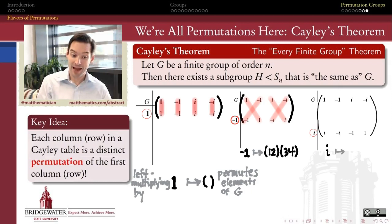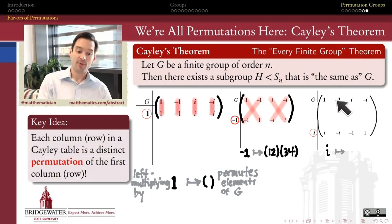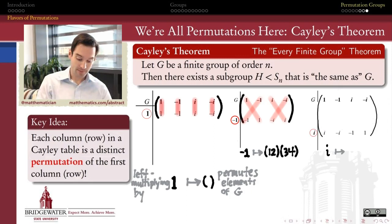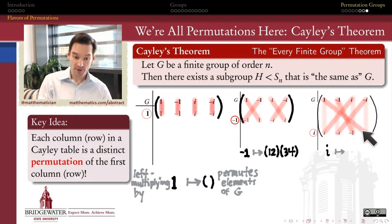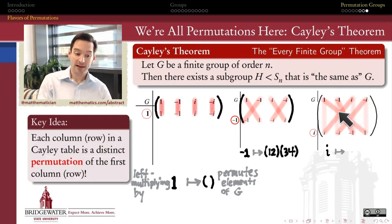What about multiplication by i? If I multiply i times 1, I get i. i times minus 1 gives minus i. i times i gives negative 1. i times minus i gives 1. What permutation is that? It ends up being a 4-cycle: 1 goes to position 4, 4 goes to position 2, 2 goes to position 3, and 3 goes back to position 1. So that's the 4-cycle (1 4 2 3).